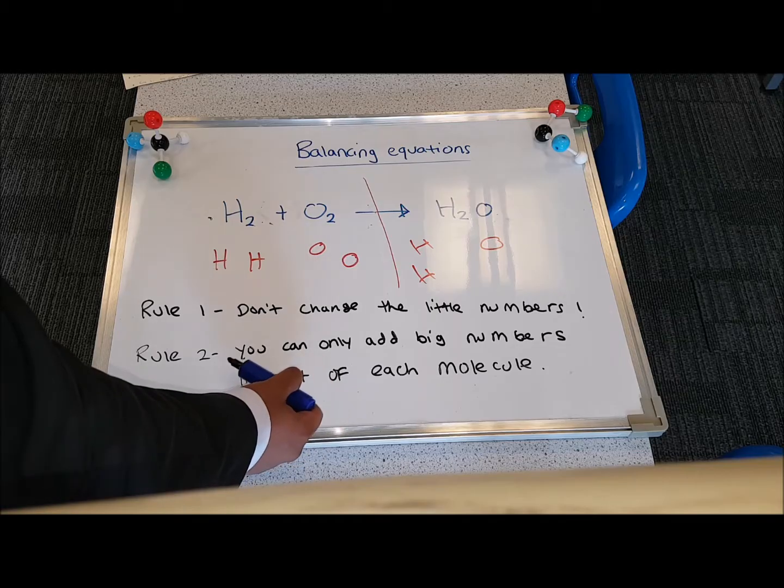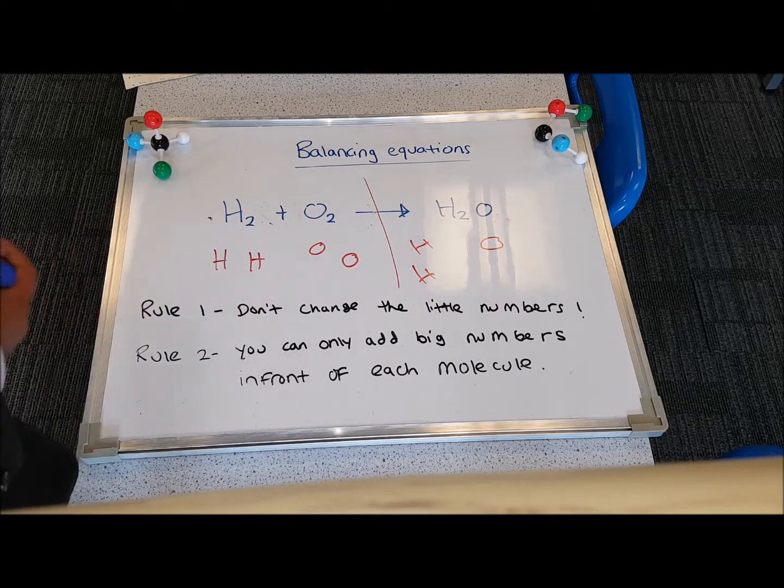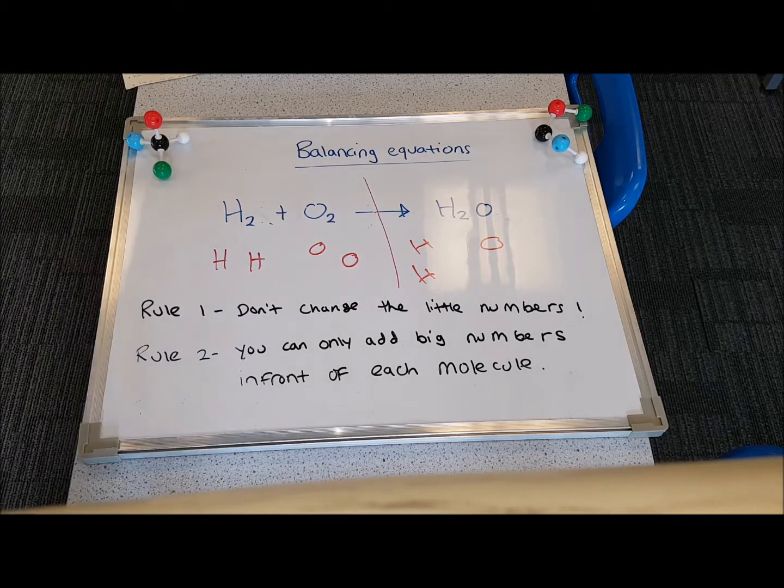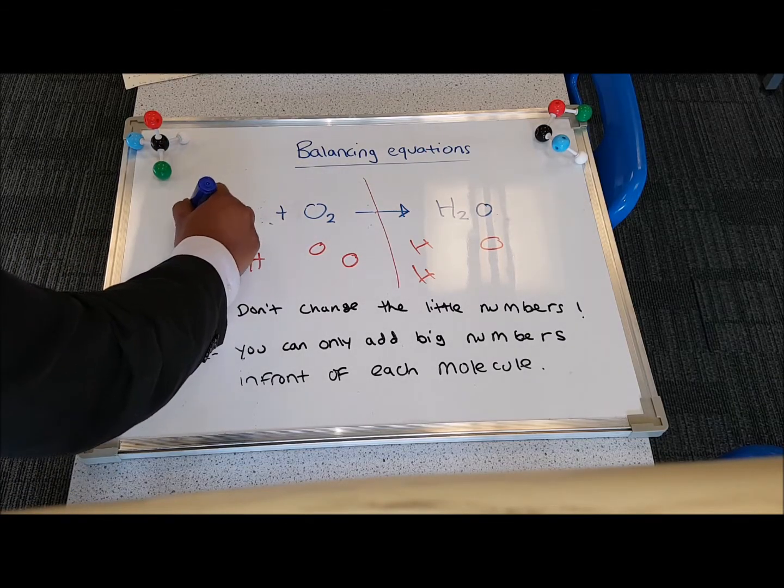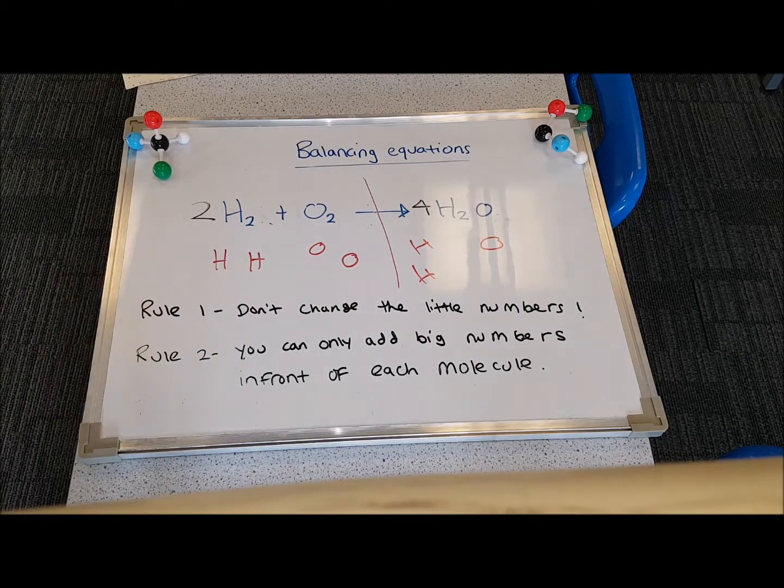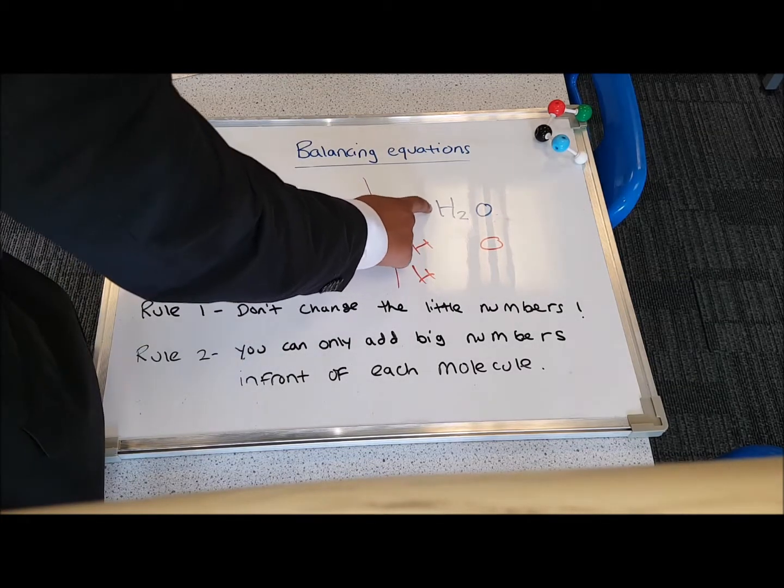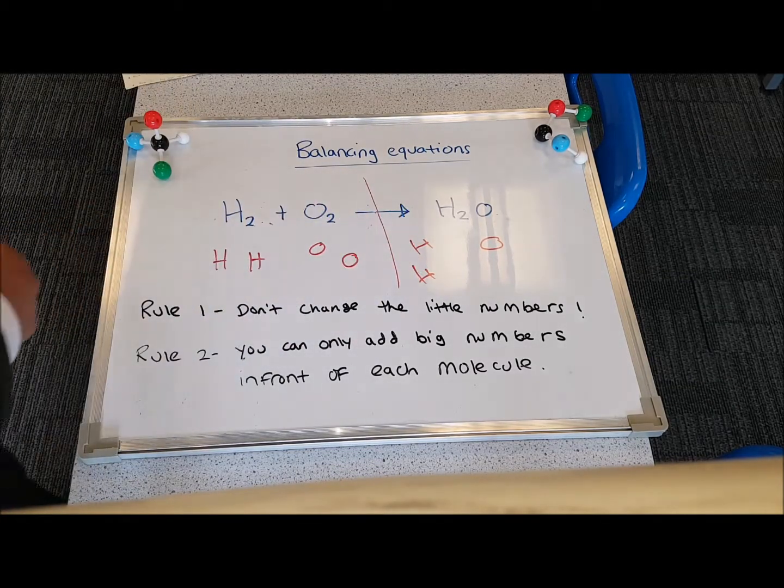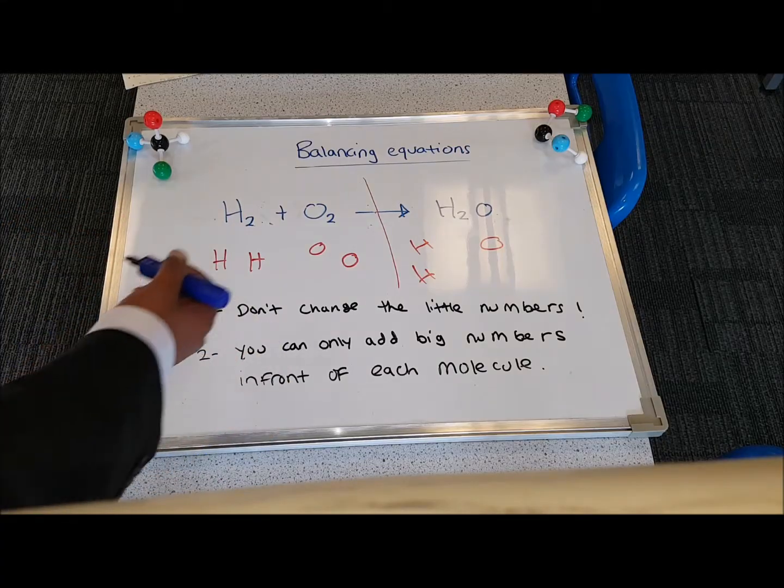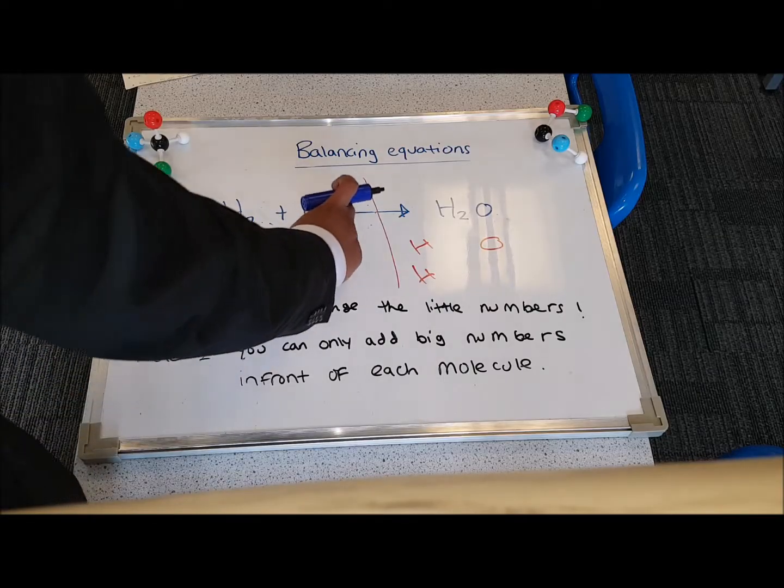Rule number two is you can only add big numbers in front of each molecule. What that means is, for example, I could put a number two here, I could put a number four here, any number to balance this equation. Now, this number, or these big numbers, have to go at the front of each molecule, the ones that you're trying to balance. You can't, for example, put a two over here, it has to be at the front.